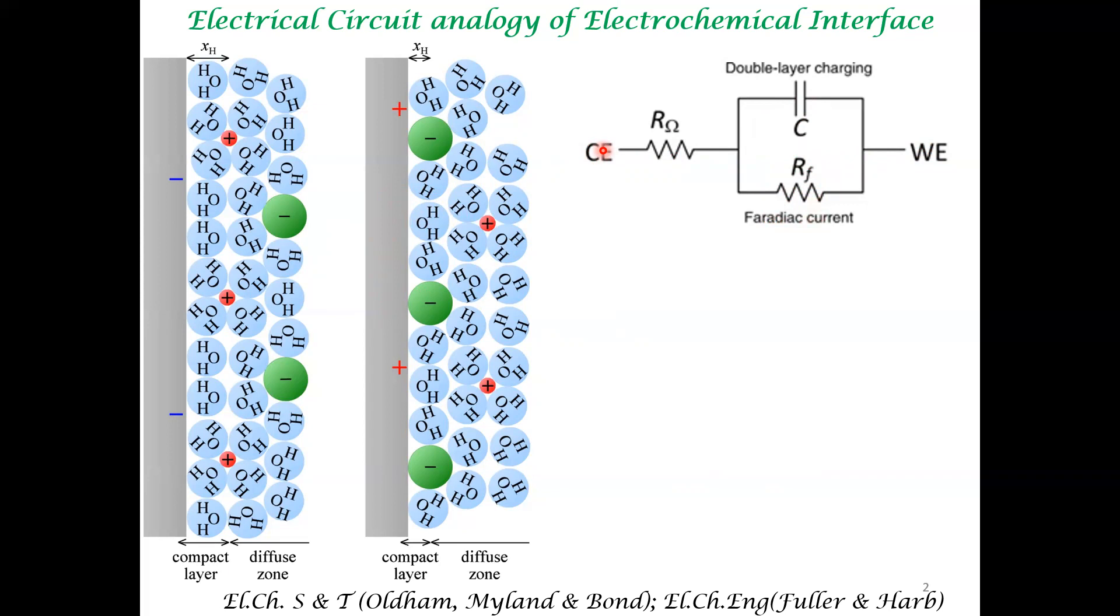So overall, there are two routes to ion current. One is the Faraday current, which becomes important once the potential is beyond a certain critical potential. This potential depends upon the thermodynamics of the relevant redox couple. And the capacitative current depends upon the capacitance of this interface and how the voltage changes with time. This is very important.